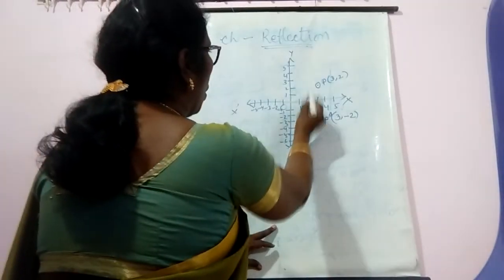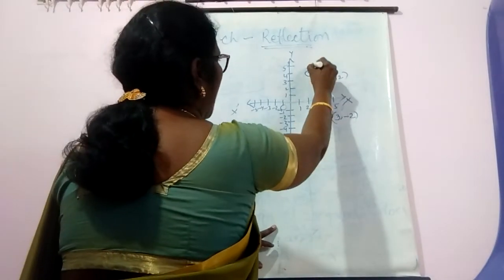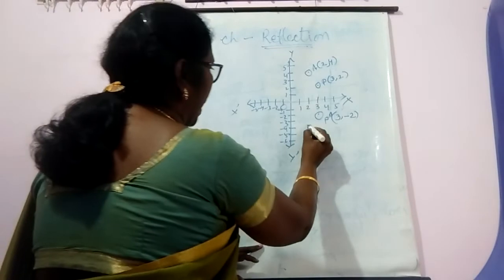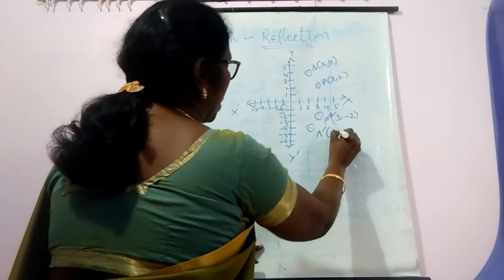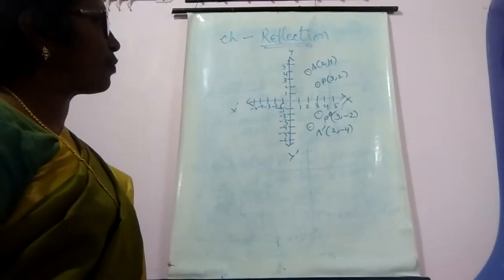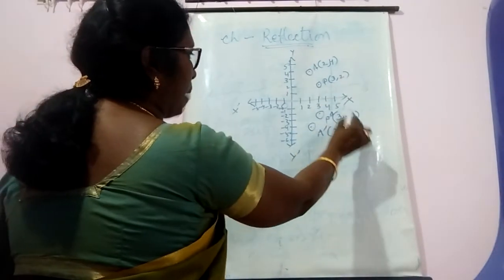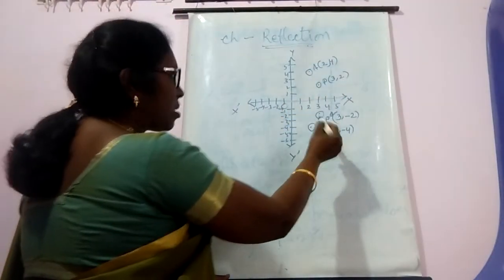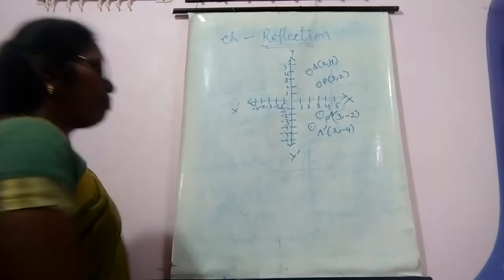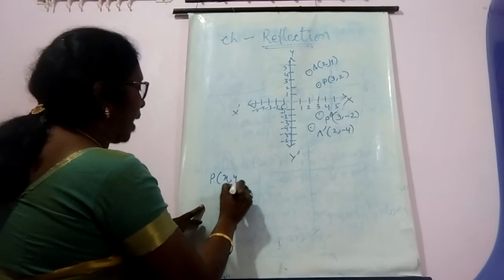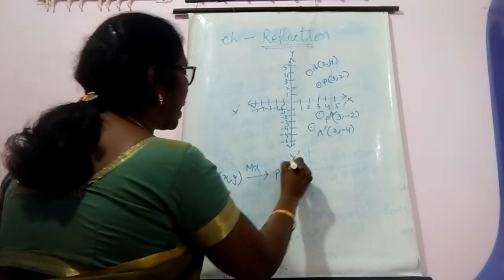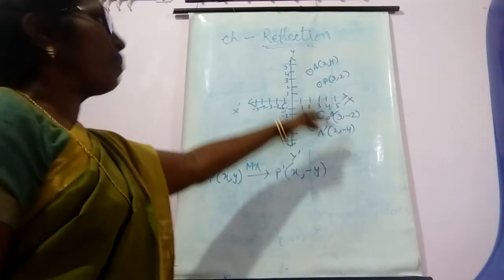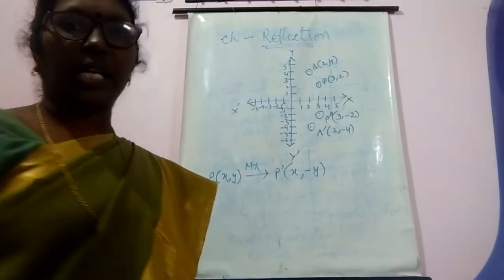Let me plot another point A(2, 4). When this point A reflects through the x-axis, we get the image A'(2, -4). So we can observe that P(3, 2) maps to (3, -2) and A(2, 4) maps to (2, -4). That means when a point P(x, y) reflects through the x-axis, we get the image P' whose coordinates are (x, -y). The x-coordinate remains the same and the y-coordinate changes its sign.